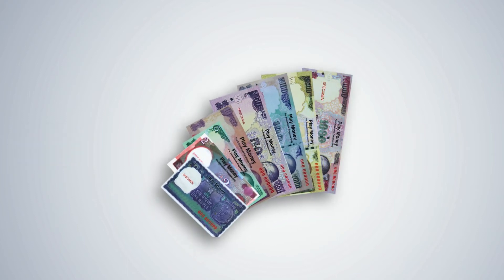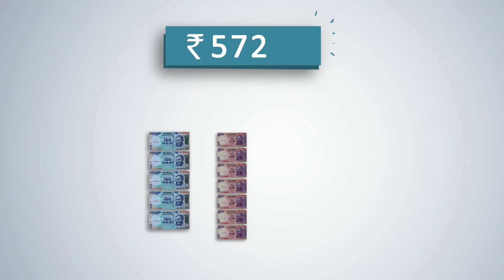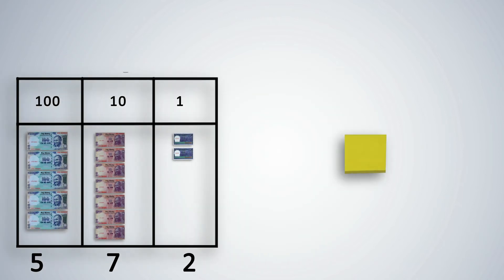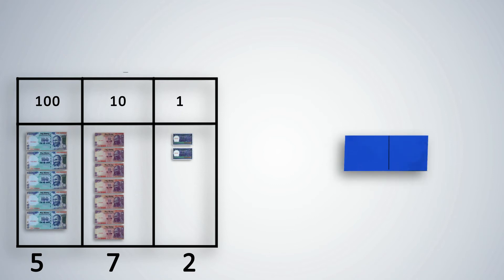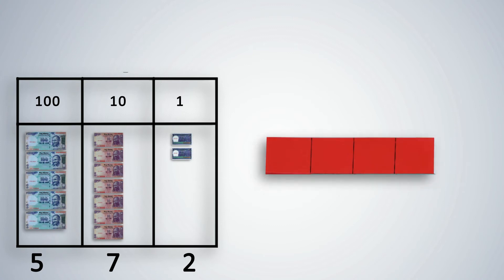Let us take some more examples with play money. How much money do we have here? We have 5 hundred-rupee notes, 7 ten-rupee notes, and 2 one-rupee notes. Here, 5 is in the hundreds place, 7 in the tens place, and 2 in the ones place. In the math kit, yellow strips represent digits in the units place, blue strips represent digits in the tenths place, green strips represent digits in the hundredths place, and red strips represent digits in the thousandths place.